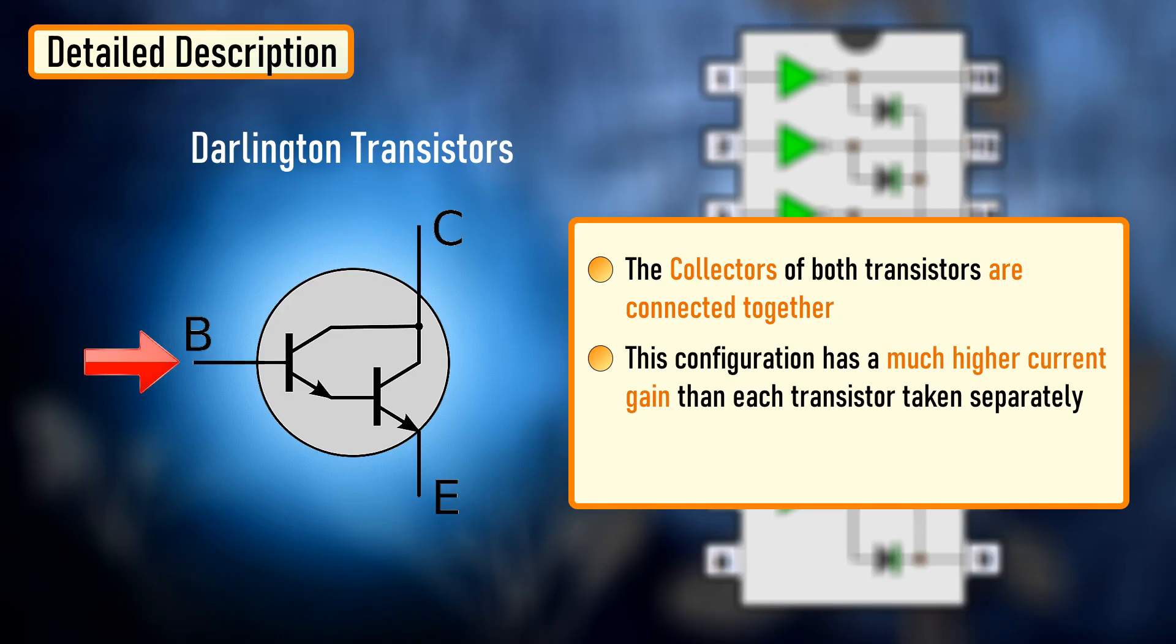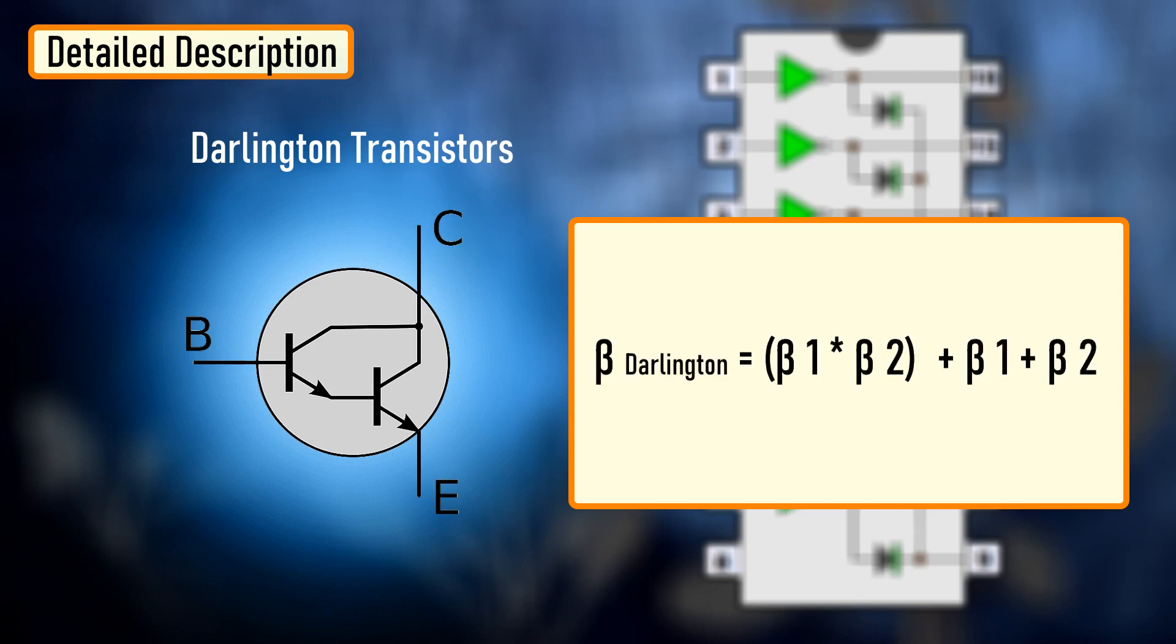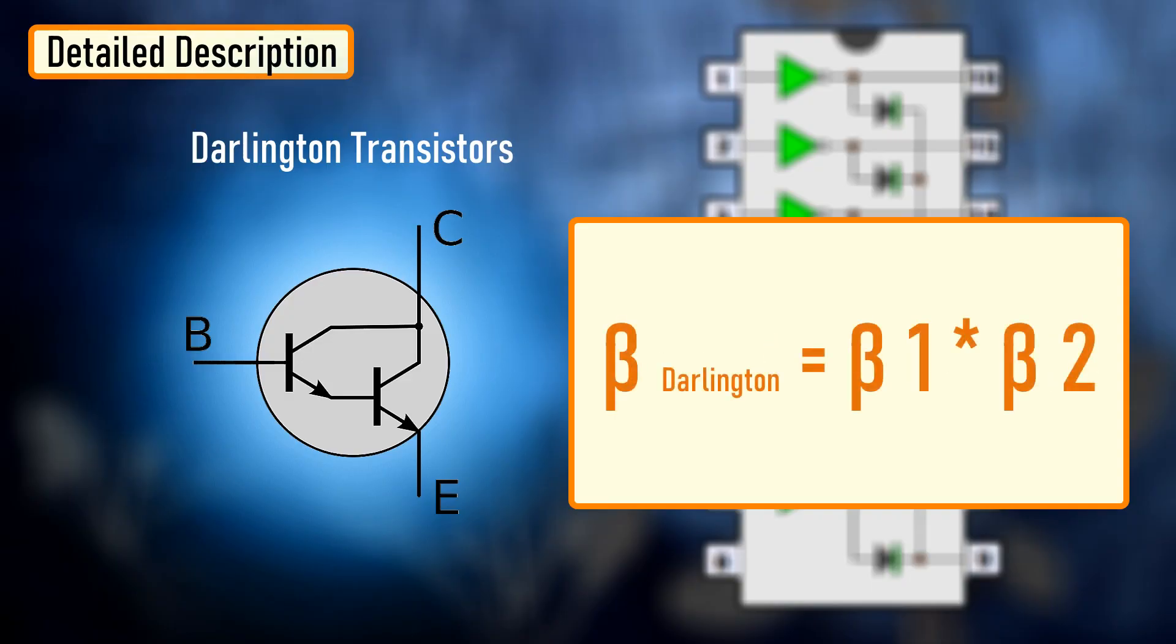A small base current can make the pair switch to a much higher current. It appears as if it is just a single transistor with one base, one collector and one emitter, creating a current gain approximately to the product of the gains of the two transistors. Since beta 1 and beta 2 are high enough, we can write this statement as beta Darlington is similar to beta 1 times beta 2. This connection creates the effect of a single transistor with a very high current gain.